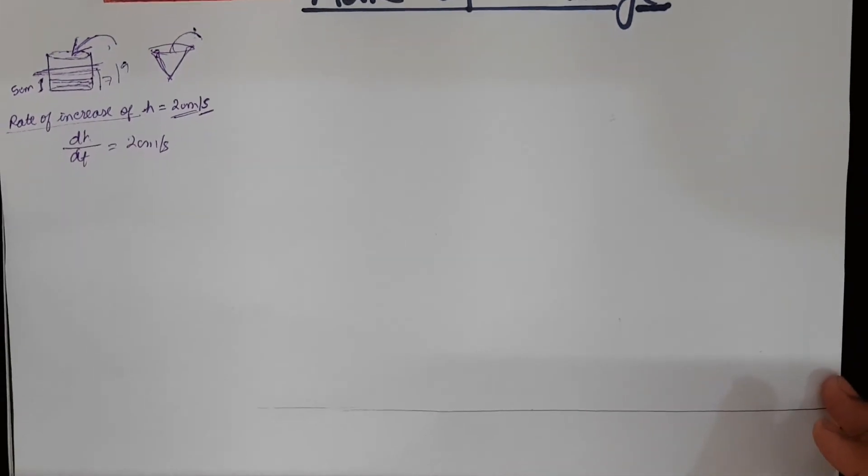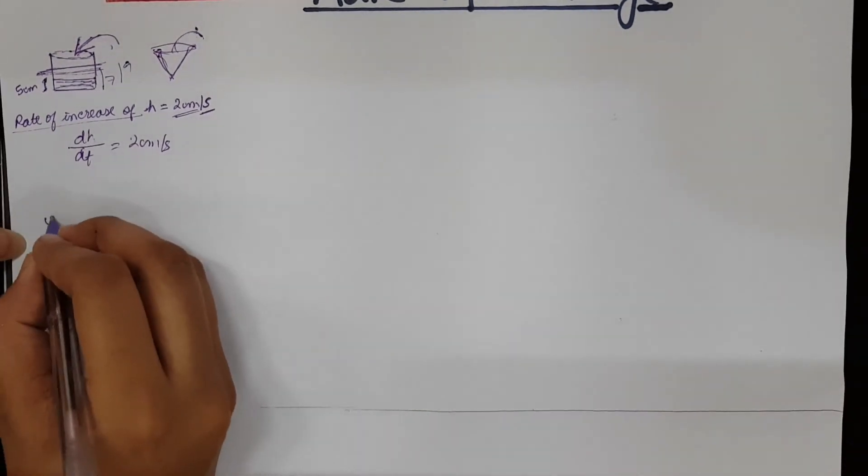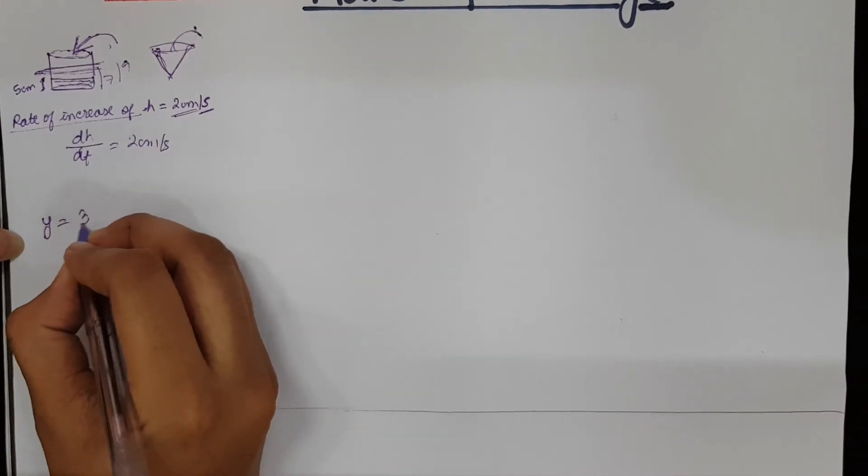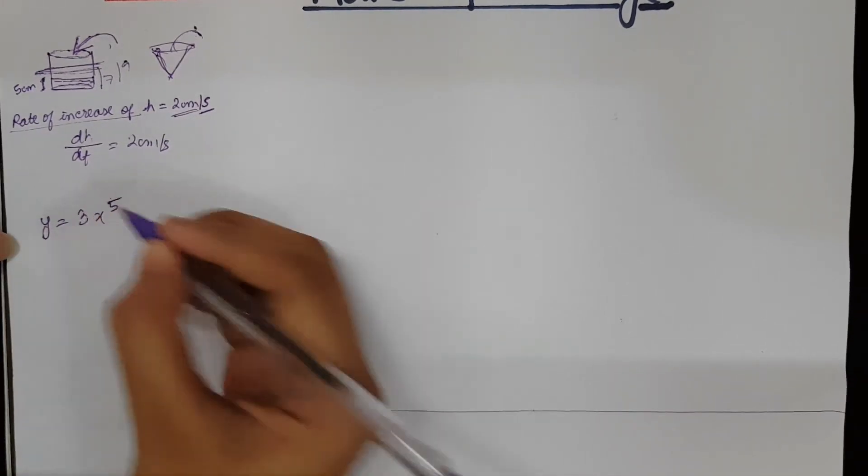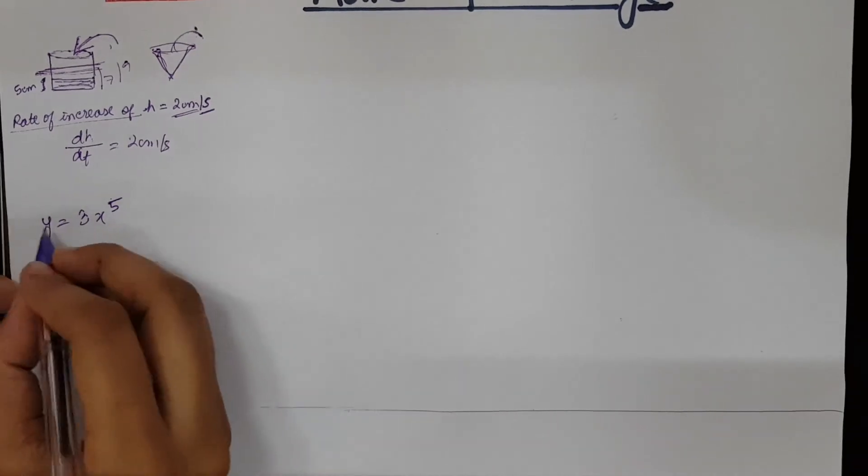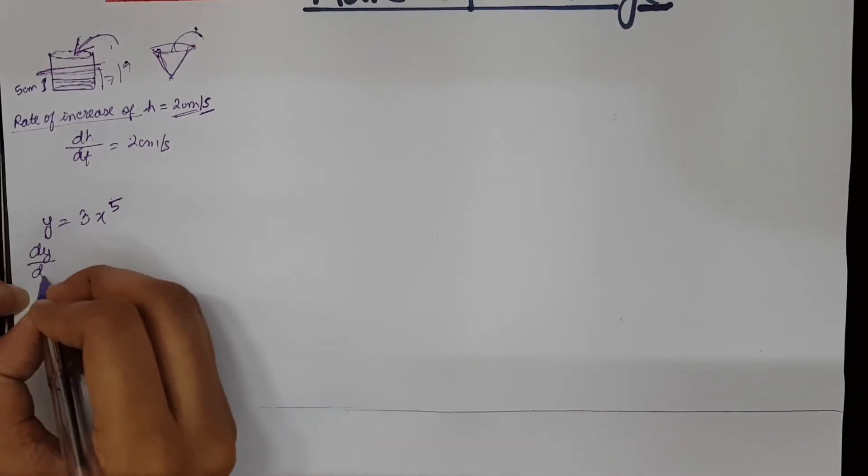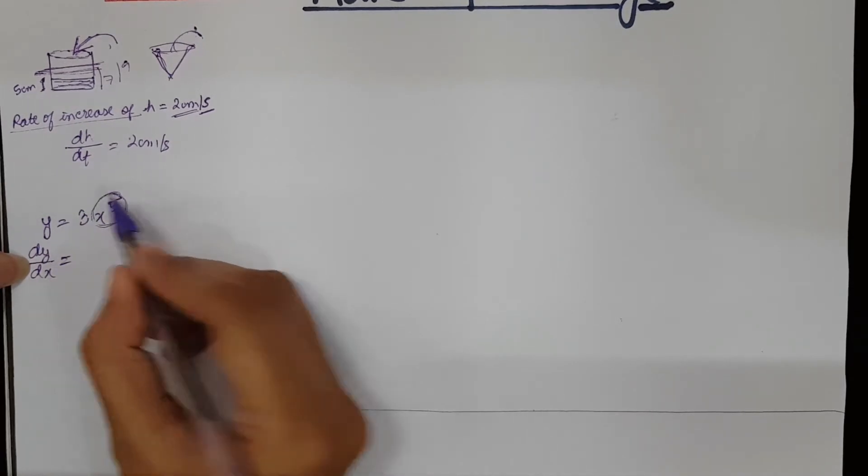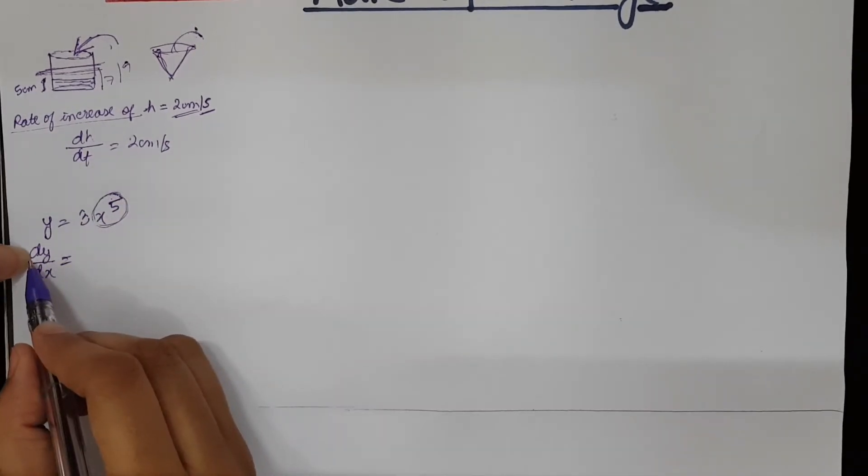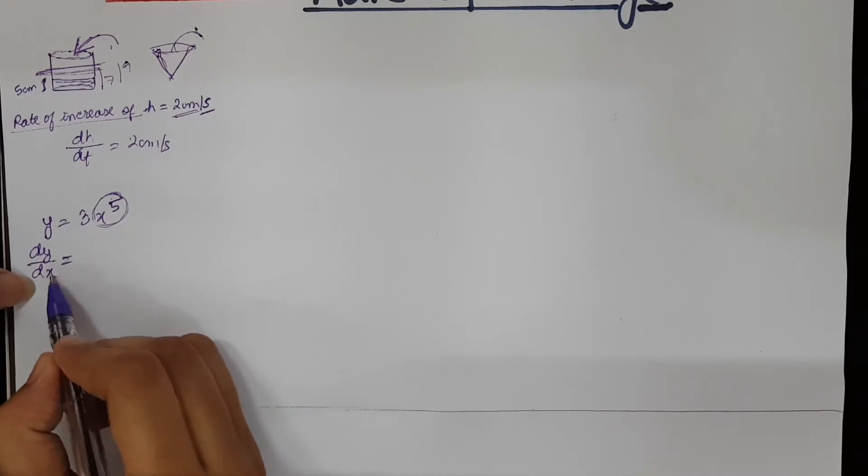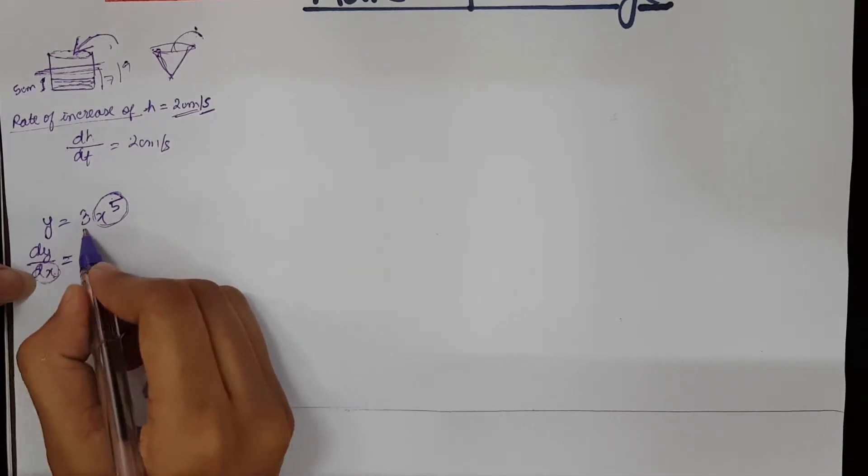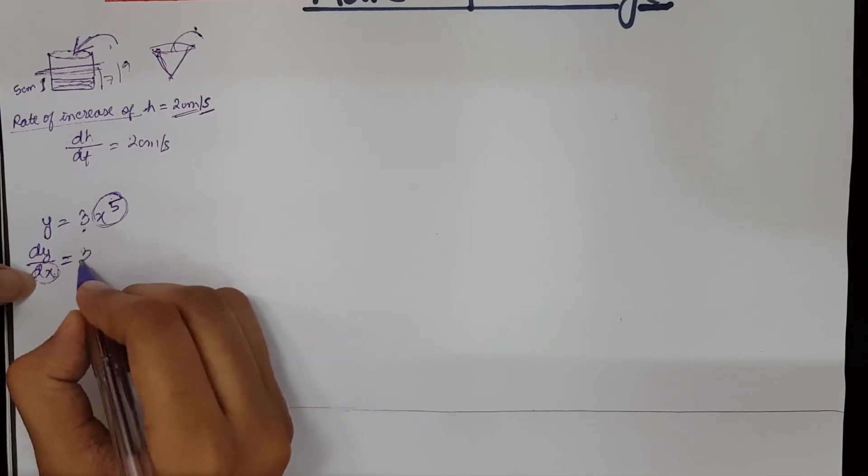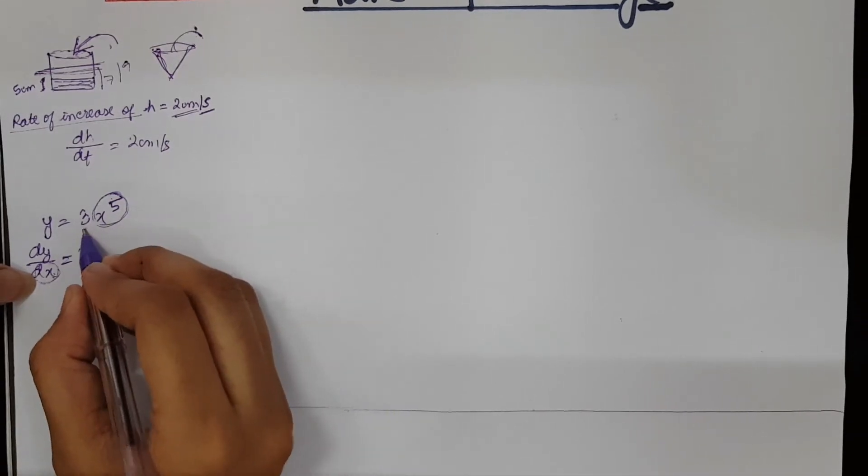So suppose I am giving a basic example. Suppose y equals to 3x to the power 5. So if we differentiate this, it becomes dy/dx. So for differentiation, we need to understand that we will differentiate only the x term. Since I have written here dy/dx, that is differentiation has to be with respect to x. So the number here has nothing to do with differentiation. It will stay there.